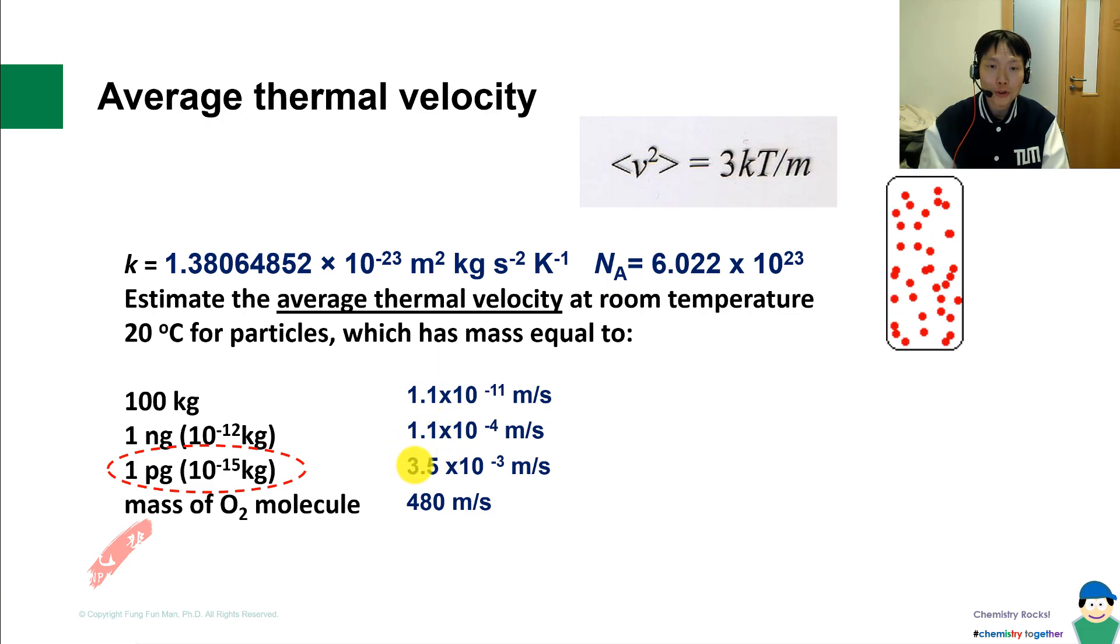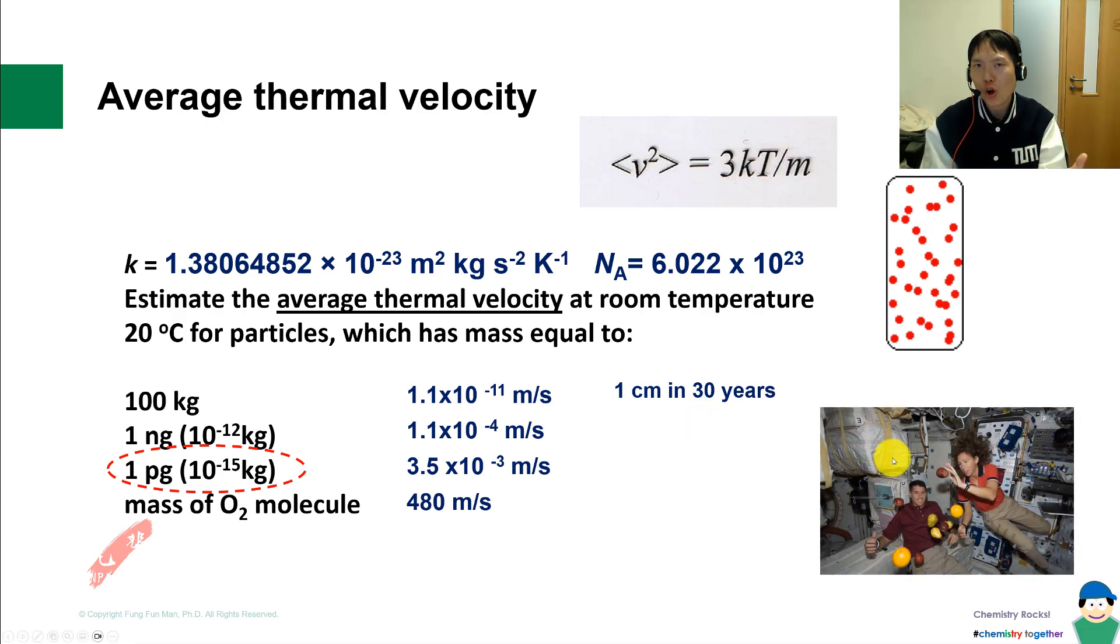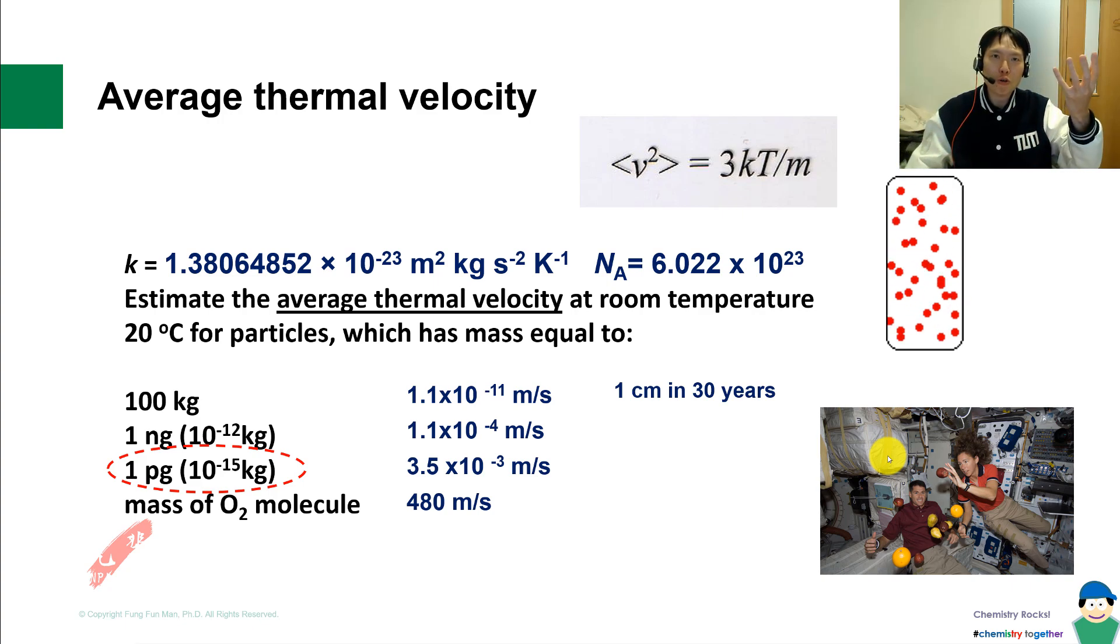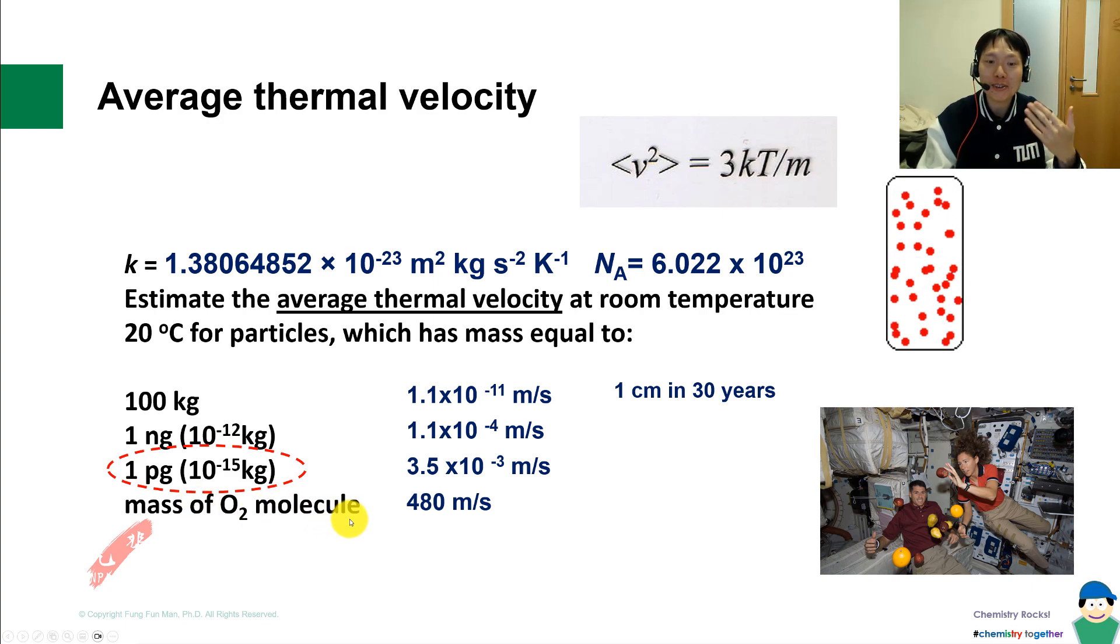These are the answers. I hope you calculated by hand and calculator, not by generative AI or any large language model. I want you to understand the proportion. For a 100 kilogram mass of gas at 20 degrees Celsius, it's moving at 1.1 times 10 to the power negative 11 meters per second. Essentially, that's about 1 cm in 30 years—very, very slow, like slow motion in the outer atmosphere, like an astronaut. Now let's look at oxygen molecules that we breathe in and out for respiration: 480 meters per second.